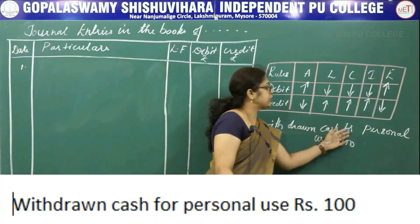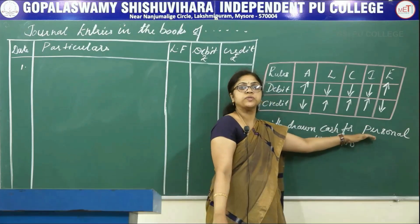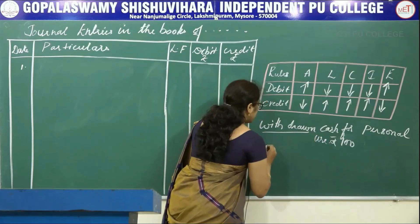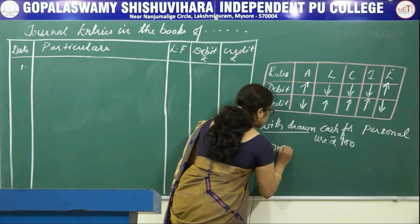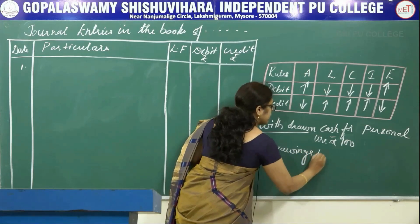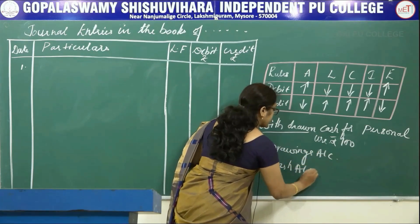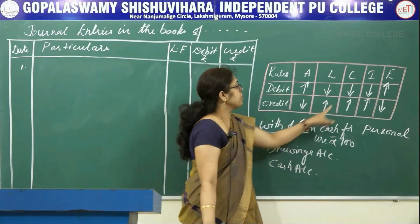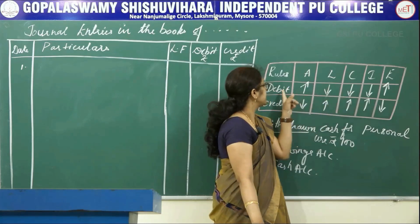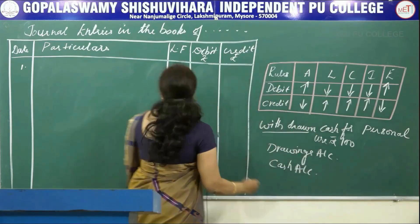Withdrawn cash for personal use. If cash is withdrawn for personal use, it is treated as drawings. The two accounts involved are: one is drawings account, and another one is cash account. Drawings comes under capital. Capital reduces means it has to be debited. So, debit the drawings account.